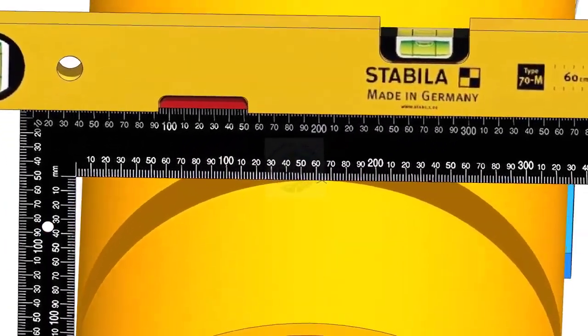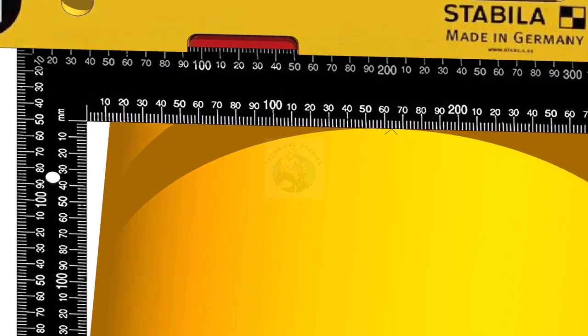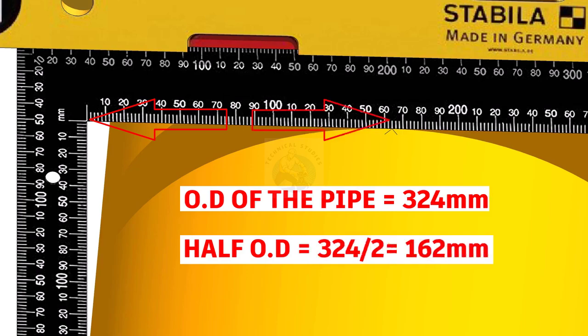Now mark half diameter of the pipe on the top of the pipe as shown. Since the OD of this pipe is 324mm, I marked 162mm here.